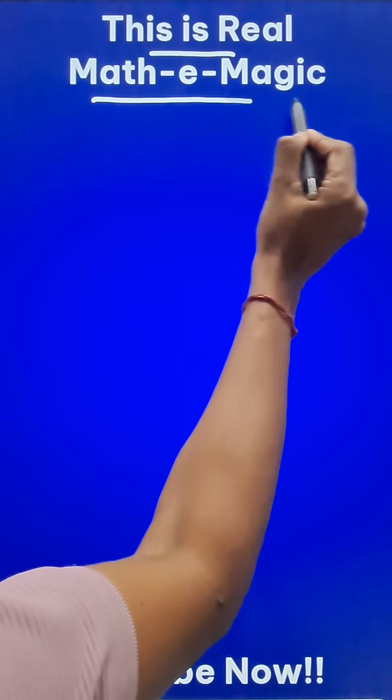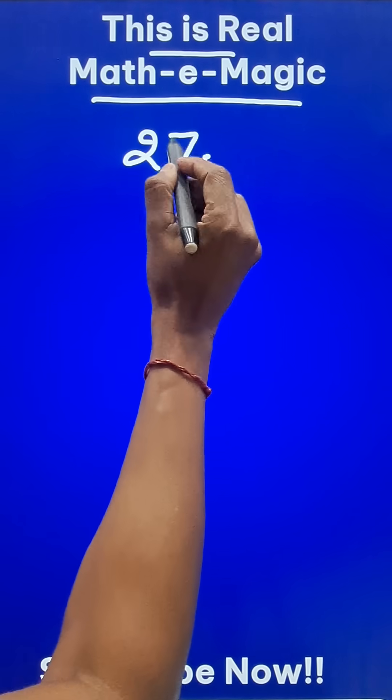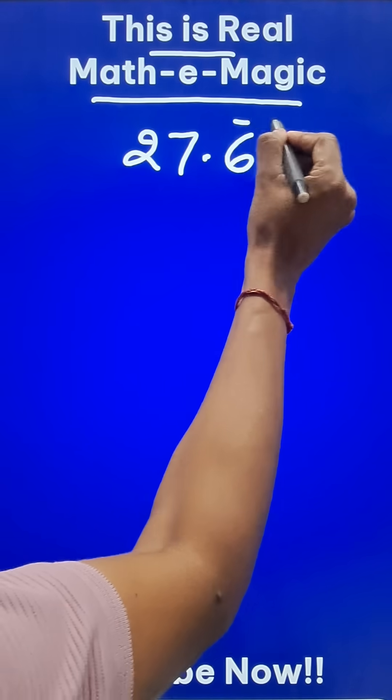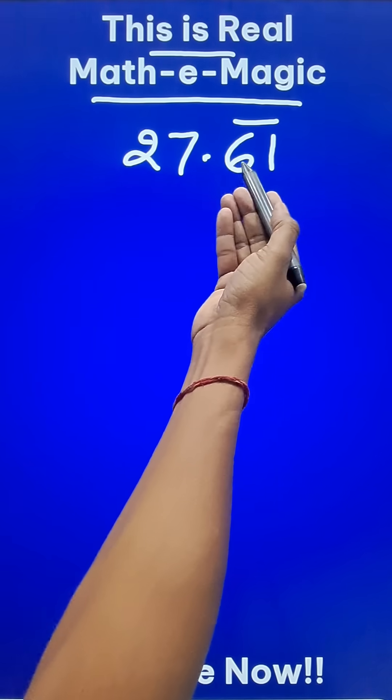Look at this real mathemagic trick. Suppose there is a non-terminating recurring decimal like 27.61 with a bar over 61, meaning that 61 repeats itself.